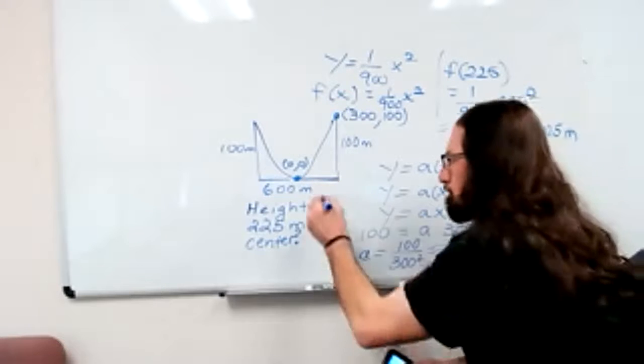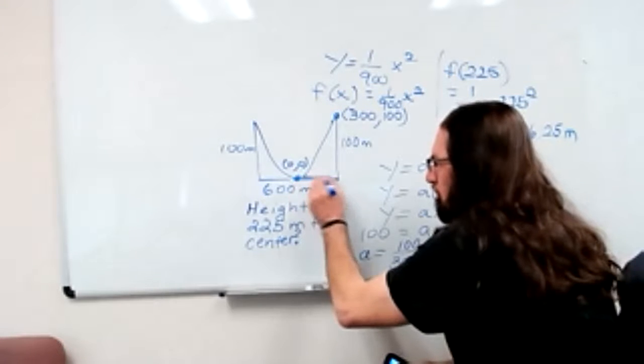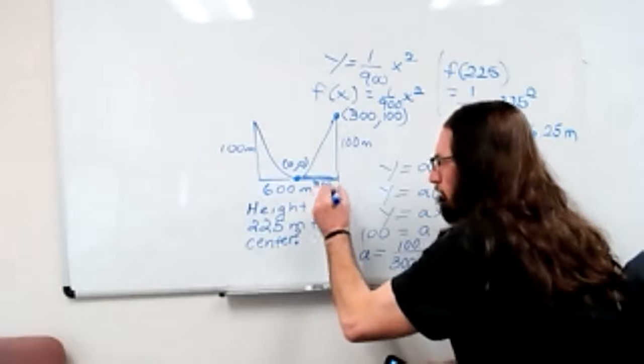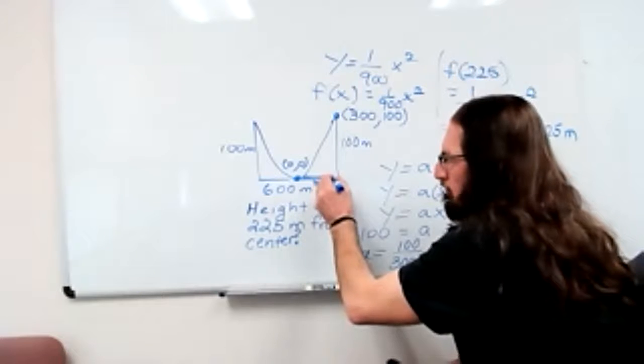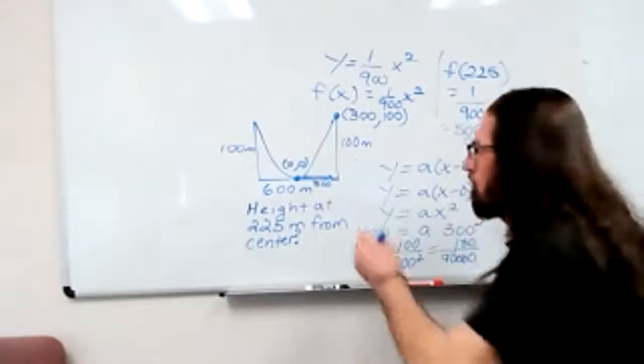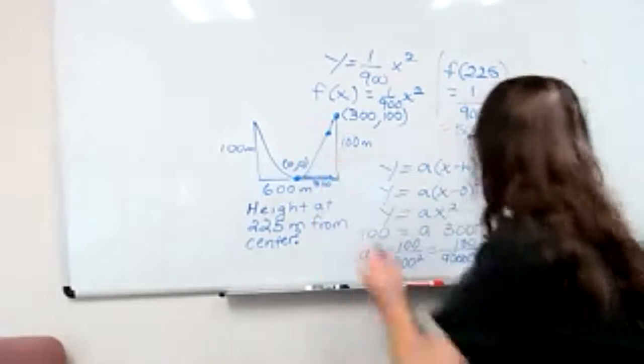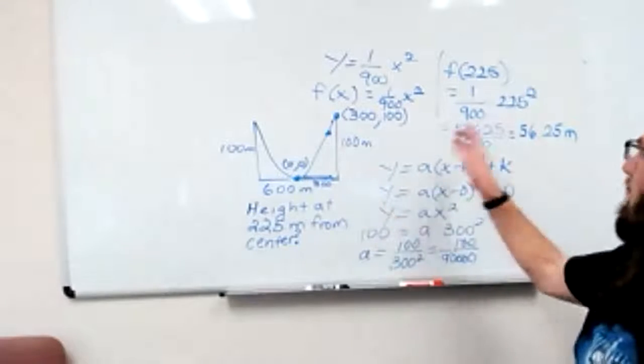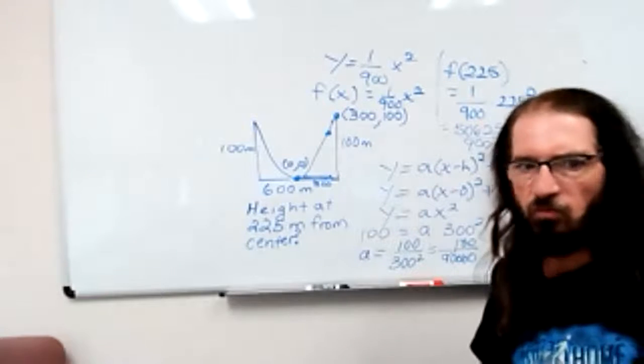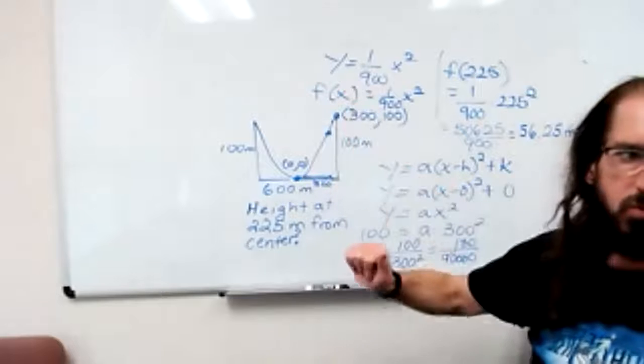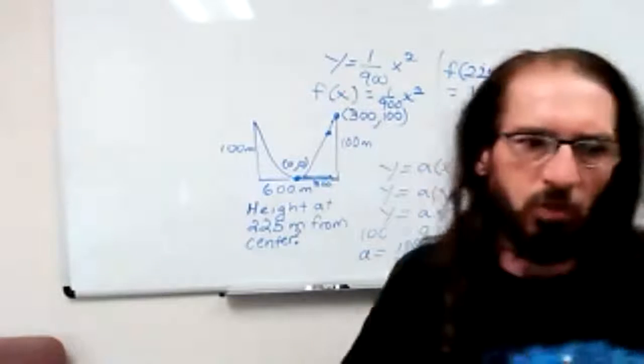So remember, this portion here is 300. 225 is about 75% of the way. So right here, you're at the point 225 comma 56.25. It's still quite a bit of rising to do to get up to that height of 100.